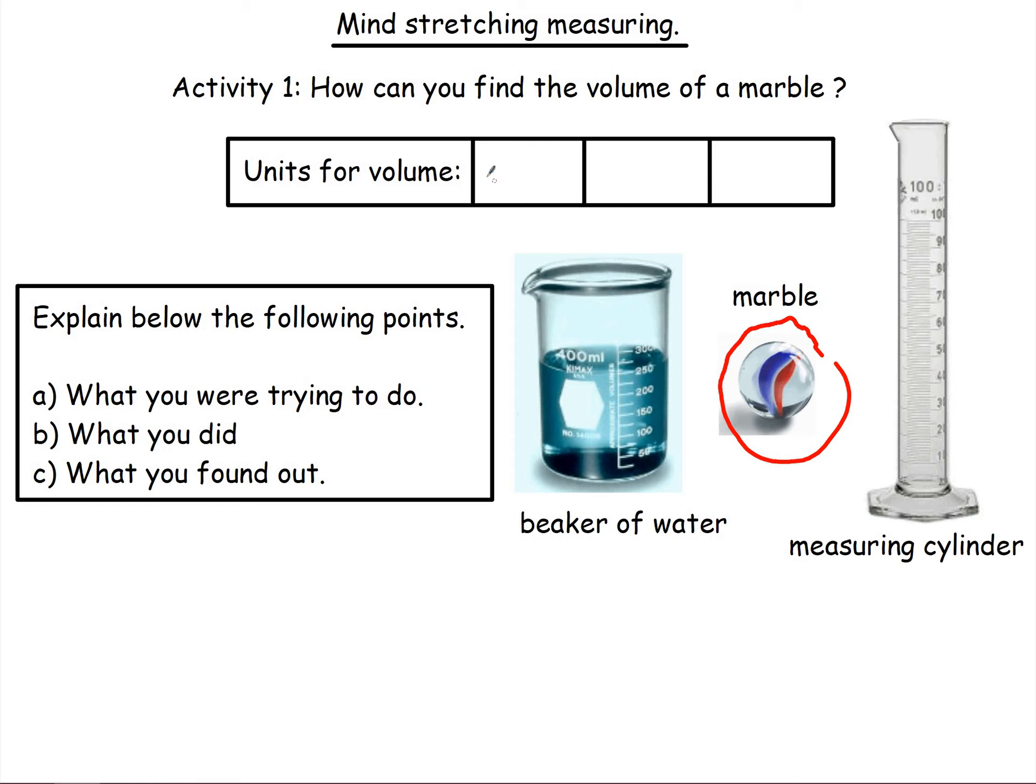Now the units for volume are millilitres, centimetres cubed, or litres. There's a thousand millilitres in one litre. Now, how do you think you could measure the volume of the marble using a beaker of water and a measuring cylinder and said marble? I'm just going to pause for just a second and you can do exactly the same and think about the following points. What are you trying to do? What did you do? And then see what you found out.